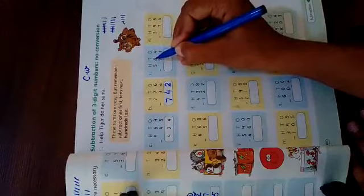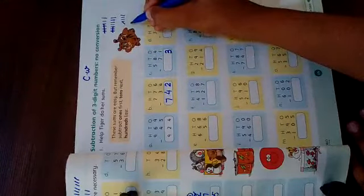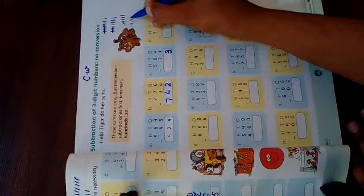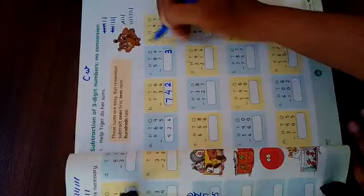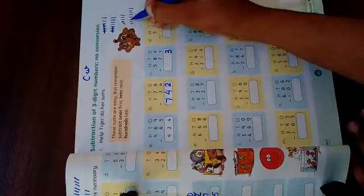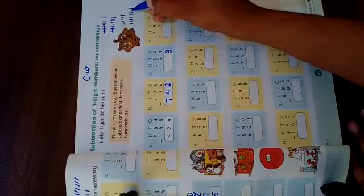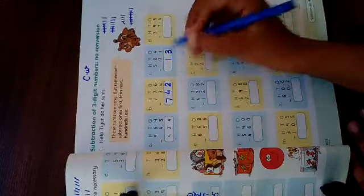Next, see. Next is eight. Eight minus seven. So we will put eight lines. One, two, three, four, five, six, seven and eight. Eight is what we have to minus. Seven. Seven is what we have to cut. One, two, three, four, five, six and seven. What is remaining? One. Okay.